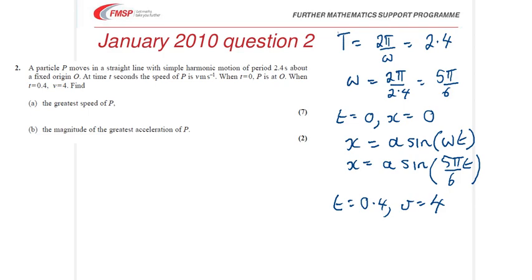So, what you have to do here to bring in velocity in terms of time, is differentiate the x expression you've got here, to get v, which is dx by dt. So, v, differentiating sine to get cos, we get a times 5π over 6, check this carefully, cos 5π over 6t.